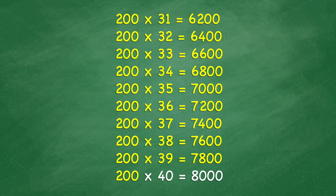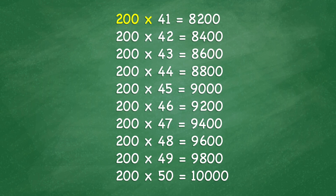200 times 40 equals 8,000. 200 times 41 equals 8,200. 200 times 42 equals 8,400. 200 times 43 equals 8,600. 200 times 44 equals 8,800. 200 times 45 equals 9,000.